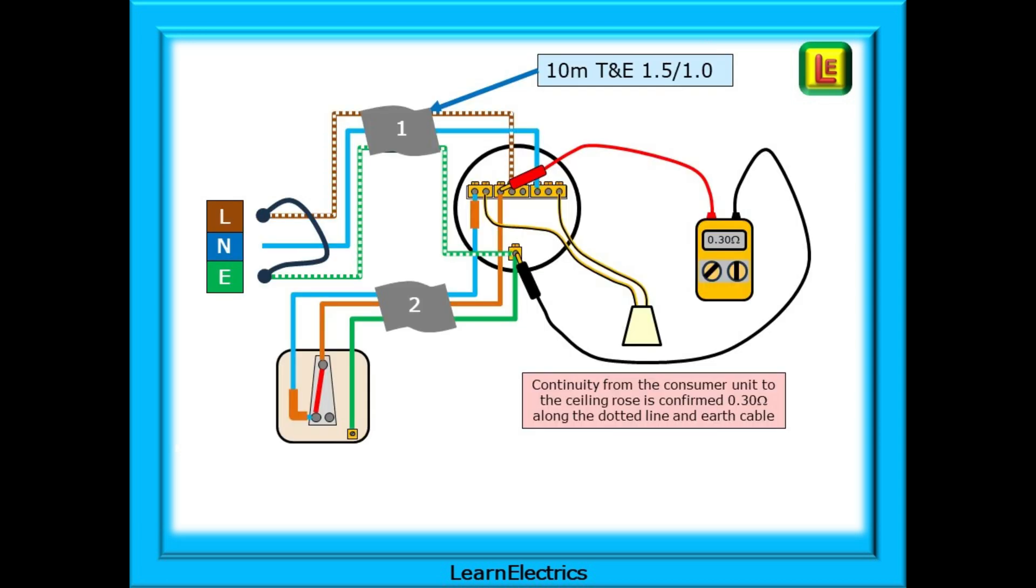The dotted lines show the two cables under test: from the live loop terminal to the consumer unit on the brown conductor, through the link to the CPC and back to the earth terminal on the CPC.